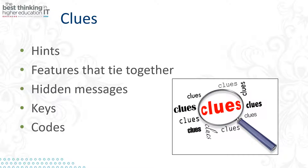Clues can take on many shapes and forms and are dictated by the types of puzzles you choose. For an alphanumeric puzzle, a clue could consist of one letter being equal to a specific number, allowing the attendees to understand that the puzzle will require them to convert letters to numbers. Academic clues could be specific to content. For example, in a history escape room, a clue could be something that asks the birth year of a specific president or the date of an important historical event.